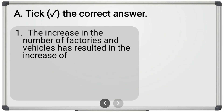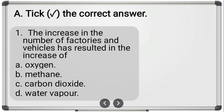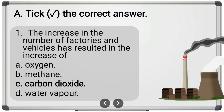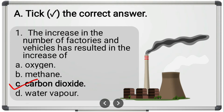Let us start with the first question: 'Tick the correct answer.' The first sub-question is: 'The increase in the number of factories and vehicles has resulted in the increase of?' The options are oxygen, methane, carbon dioxide, and water vapor. The correct answer is carbon dioxide — option C.